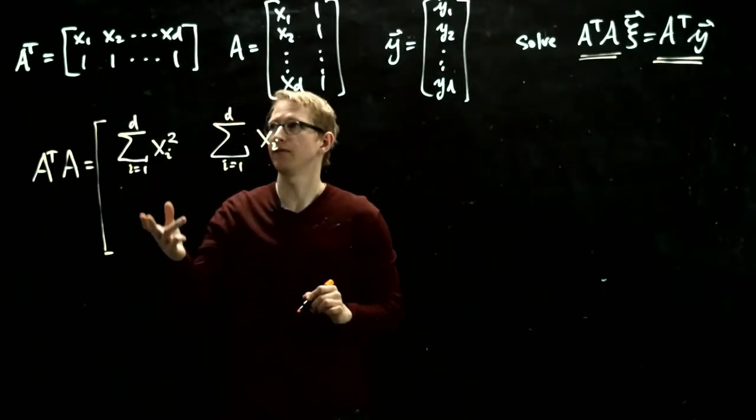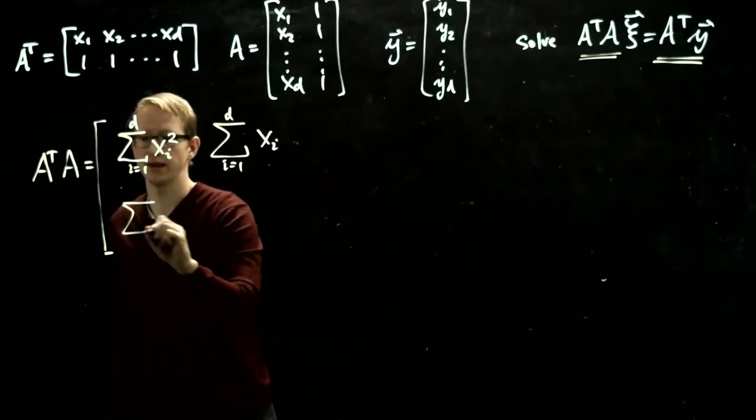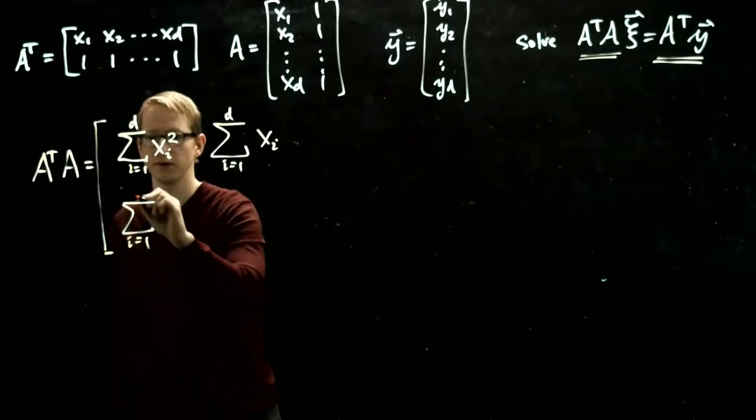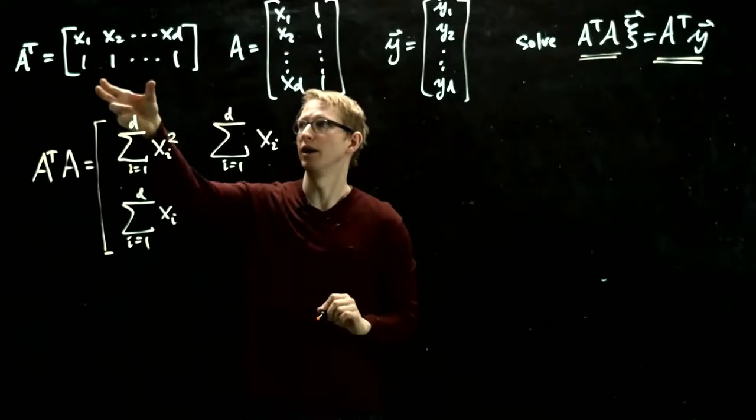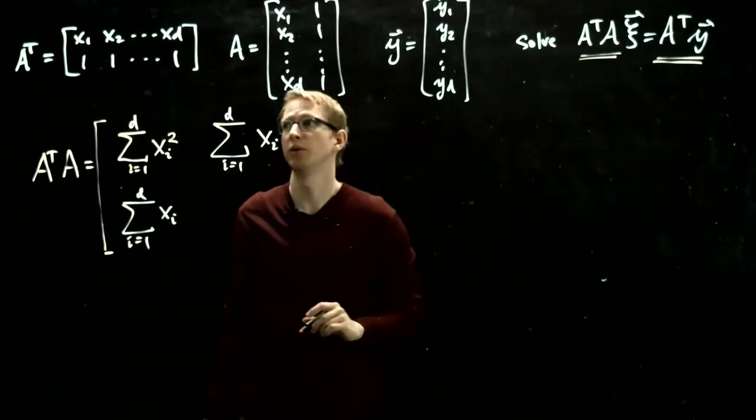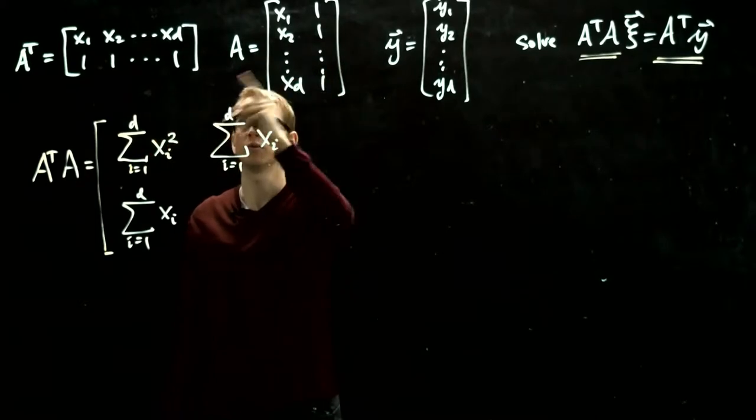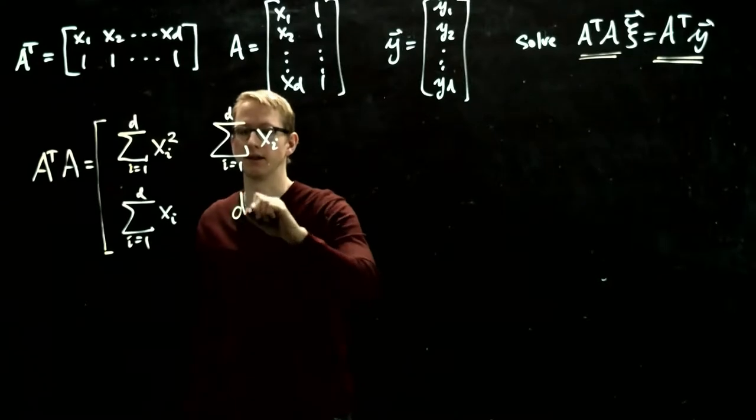On the bottom left, it's the second row here with the first column. That's the same as it was in the top right. And then the last entry on the bottom right is the second row with the second column, and that's 1 times 1 plus 1 times 1 plus 1 times 1, d times, which is just d itself.